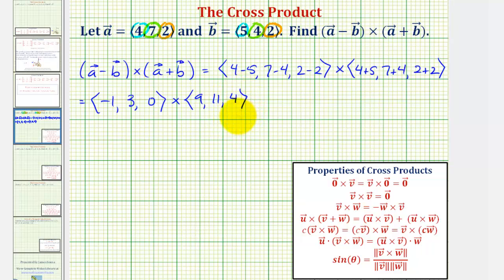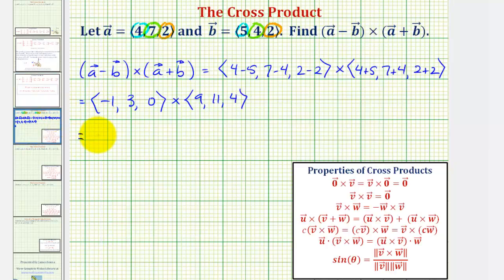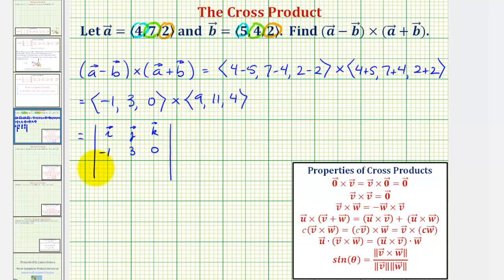To find this cross product, we set it up as a three by three determinant. For the cross product of vector v and w, the first row is the unit vectors i, j, and k; the second row is the components of vector v; the third row is the components of vector w. In our case, the second row is the components of vector a minus b: negative one, three, and zero. The third row is vector a plus b: nine, eleven, and four.